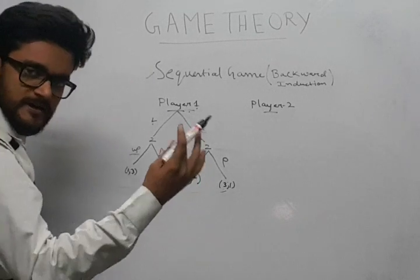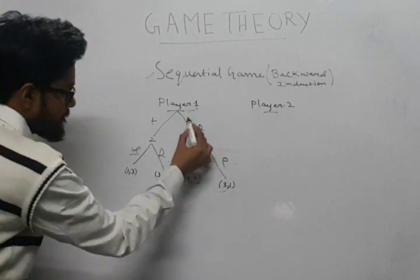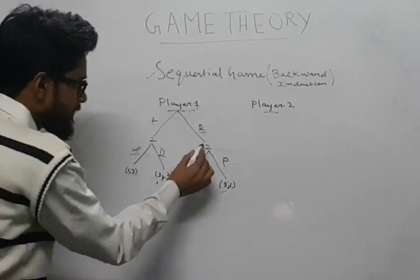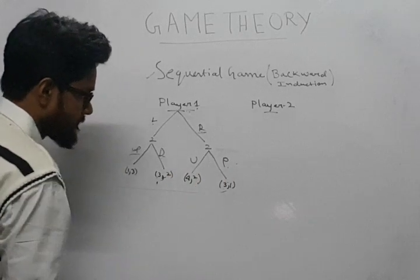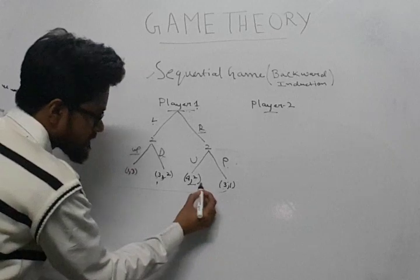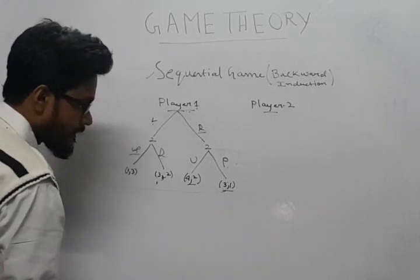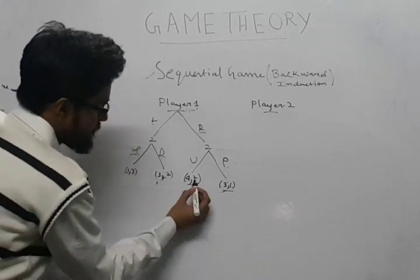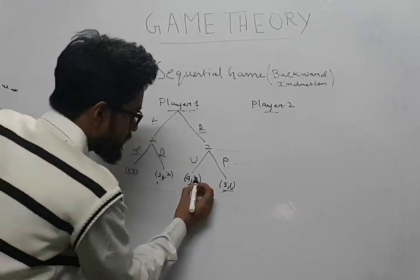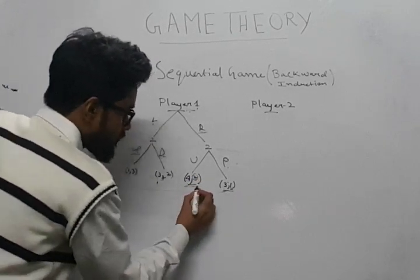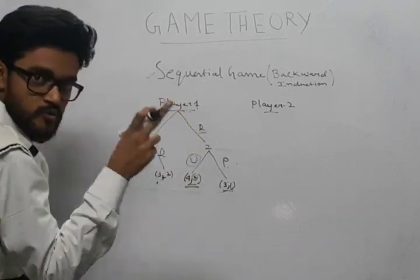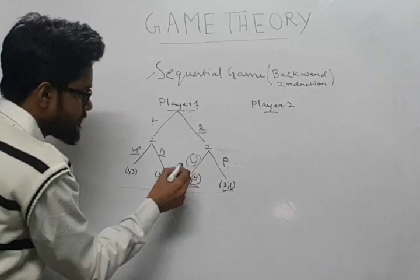Say player 1 chooses R. Player 2 then has two options. As you can see, 2 is more than 1, so player 2 will always choose up. If player 1 plays R, player 2 will always choose U.